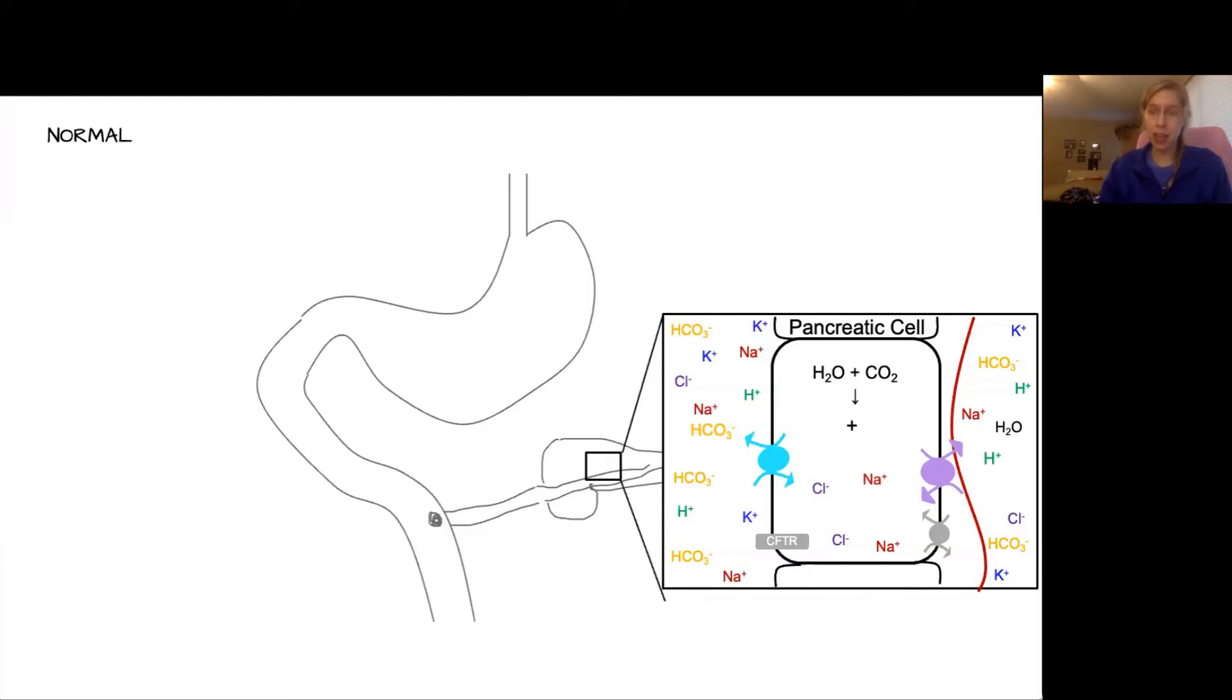This free hydrogen being added to the blood, in effect, neutralizes the free bicarbonate that was added earlier on by the stomach parietal cells.